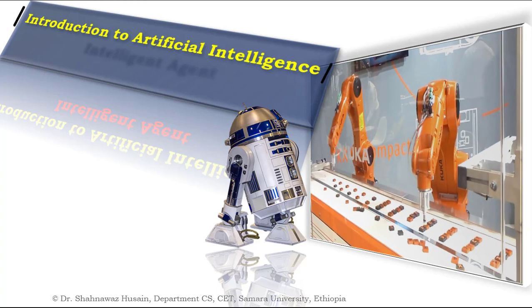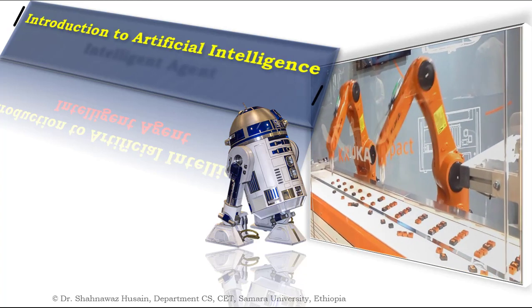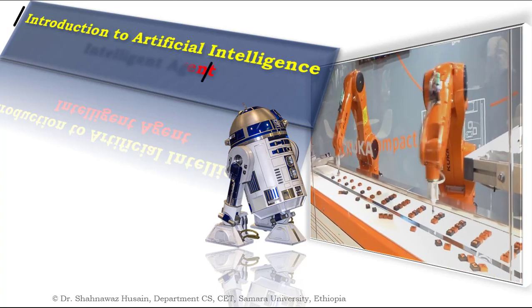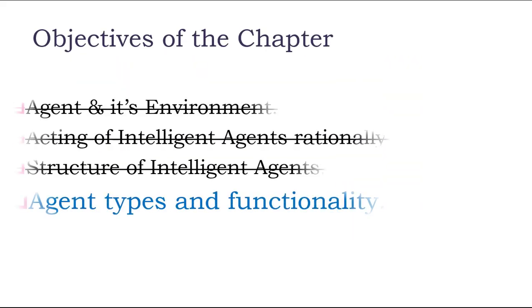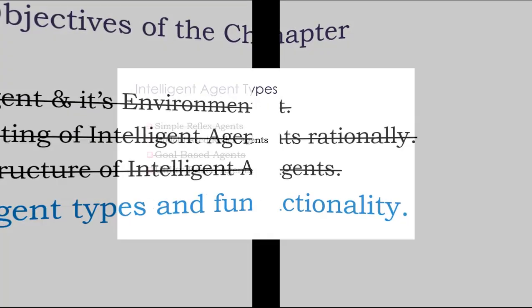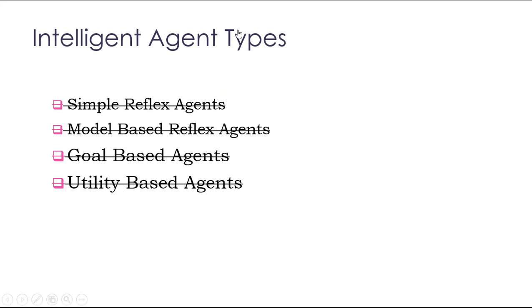Welcome back to the tutorial of Artificial Intelligence. We are discussing about intelligent agents. In the previous sections we have categorized the agents according to their nature of agent program. It is the simple reflex based agent and model based agent.